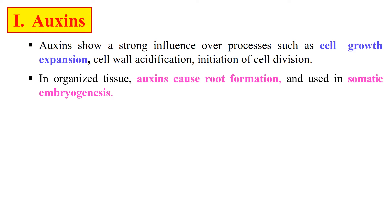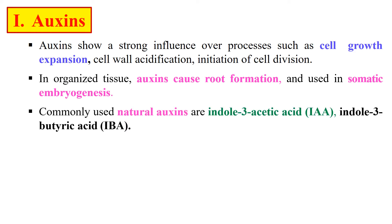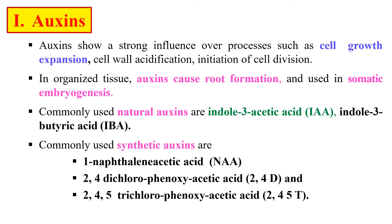Taking the example of auxins: the commonly naturally occurring auxins are IAA (indole acetic acid) and IBA (indole butyric acid). Synthetic auxins are also there, which include NAA (naphthalene acetic acid), 2,4-D (2,4-dichlorophenoxyacetic acid), and 2,4,5-T (2,4,5-trichlorophenoxyacetic acid). These are the synthetic auxins.